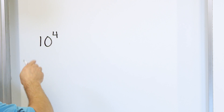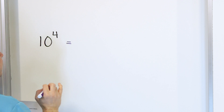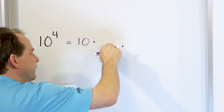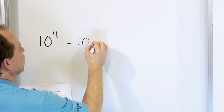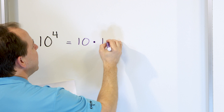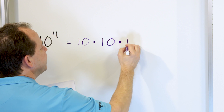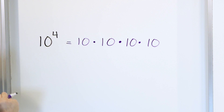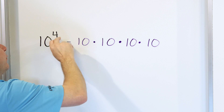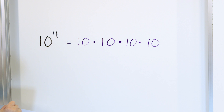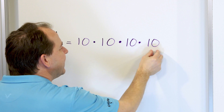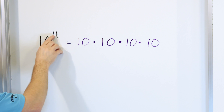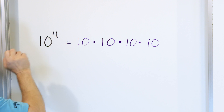When we have ten raised to the power of four, if you write it all out, it means ten times ten times ten times ten. I'm going to use a dot for multiplication instead of x, because we'll be using x for other things. Notice that I have four tens on the board because the exponent is four. All you do is take the bottom number and multiply it times itself that many times.